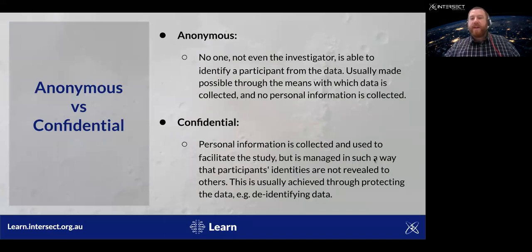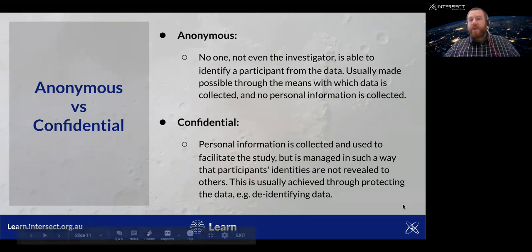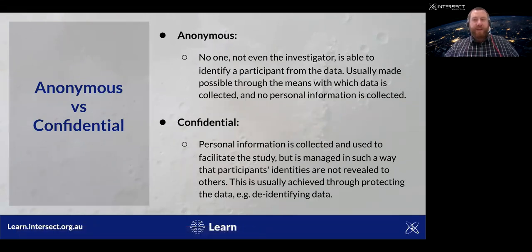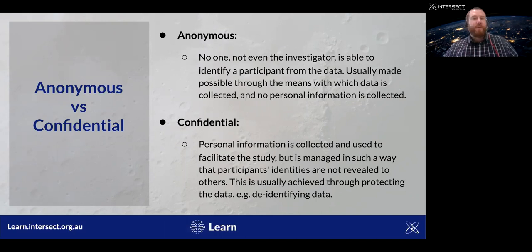Another important concept in data collection is that of anonymous data as compared to confidential data. Anonymous means no one knows who has participated in the study. For a study to be anonymous, the data collection must take place in a particular manner and appropriate tools must be employed to ensure that no identifiable information — such as the participant's IP address, email, or name — is collected. Anonymous data collection usually takes the form of online surveys, but they still have to be set up correctly to ensure full anonymity.